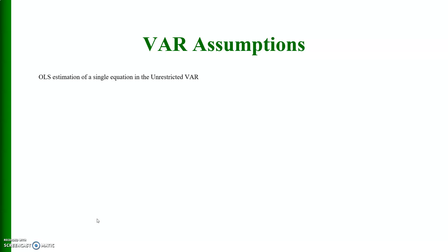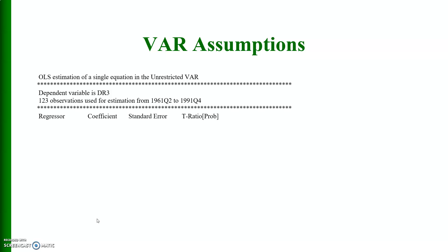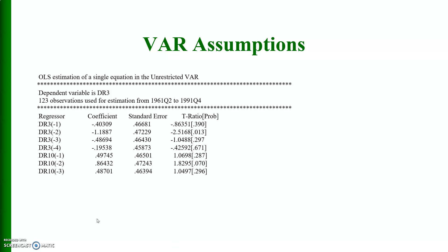OLS estimation of a single equation in the unrestricted VAR, the results are given here. There are 123 observations used for estimation from 1961 quarter 2 to 1991 quarter 4 and these are the various variables, their coefficients, standard errors, t ratios and probabilities. These are the results.